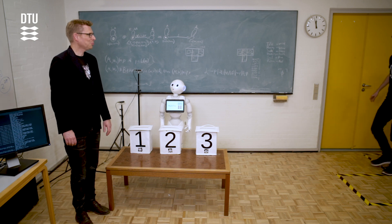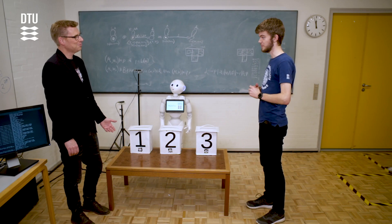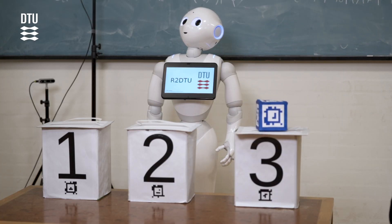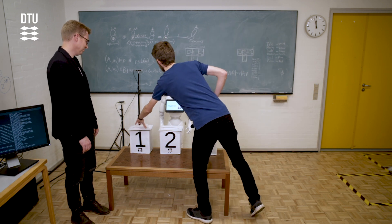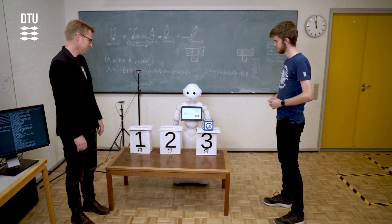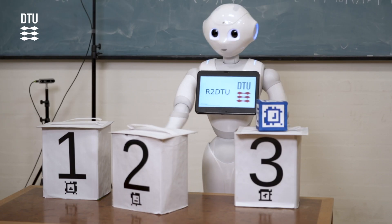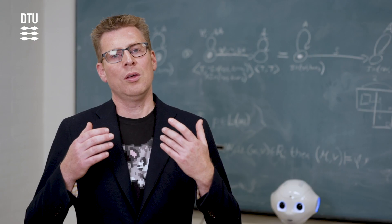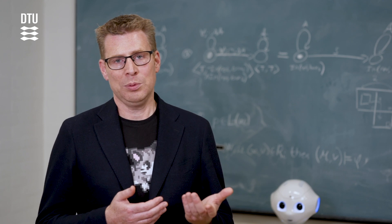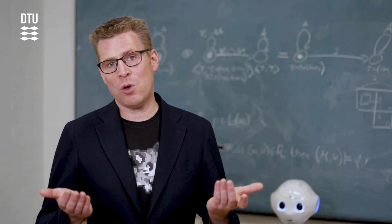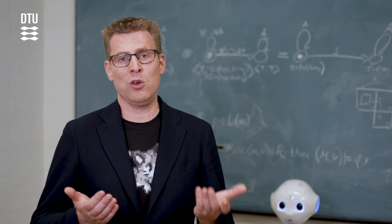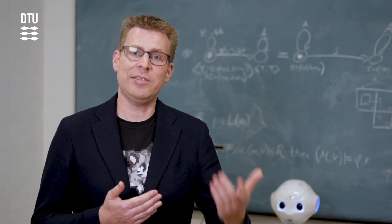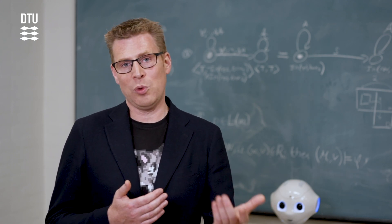Hello Lasse, welcome back. So what are you up to? I have come to fetch the blue cube. Also, I need the red cube. If you are looking for the red cube, it is now in box two. So when Lasse is reaching out for the blue cube, the robot keeps quiet. There is no reason to help him because he knows where the blue cube is. But when he is reaching out for the red cube, he has a false belief about where it is, so it makes sense for the robot to inform him so that he knows where to look.